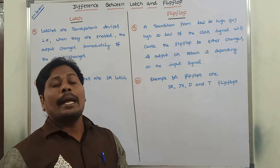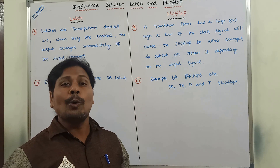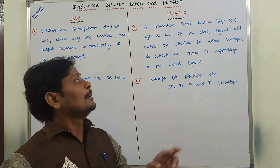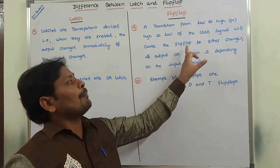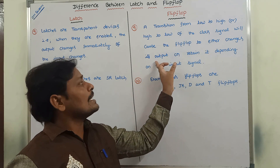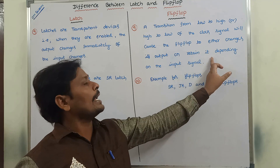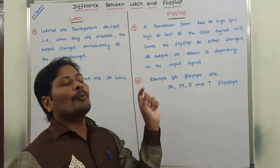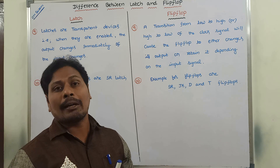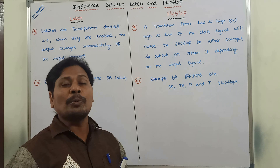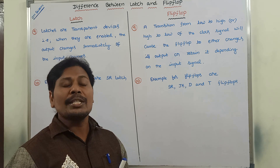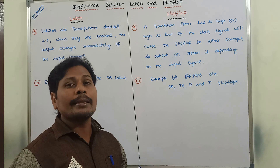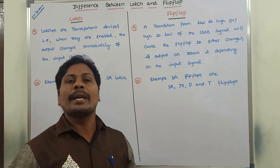Whereas in the case of a flip-flop, a transition from low to high or high to low of the clock signal will cause the flip-flop to either change its output or retain it, depending on the input signal. So whenever we apply the input and the clock signal, the output of the flip-flop can change from high to low or low to high based on the input signal.